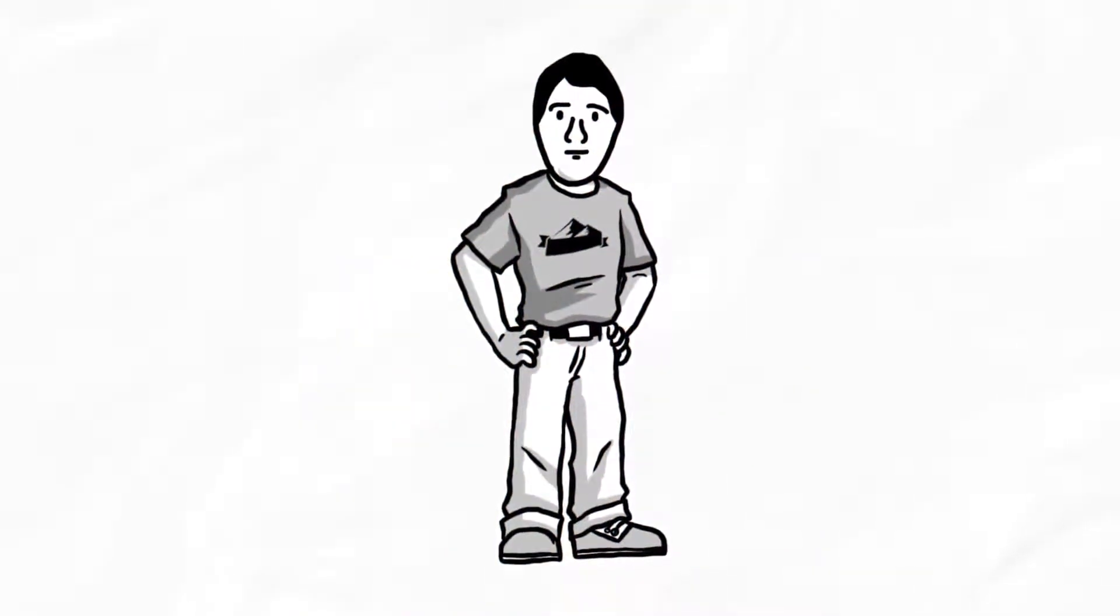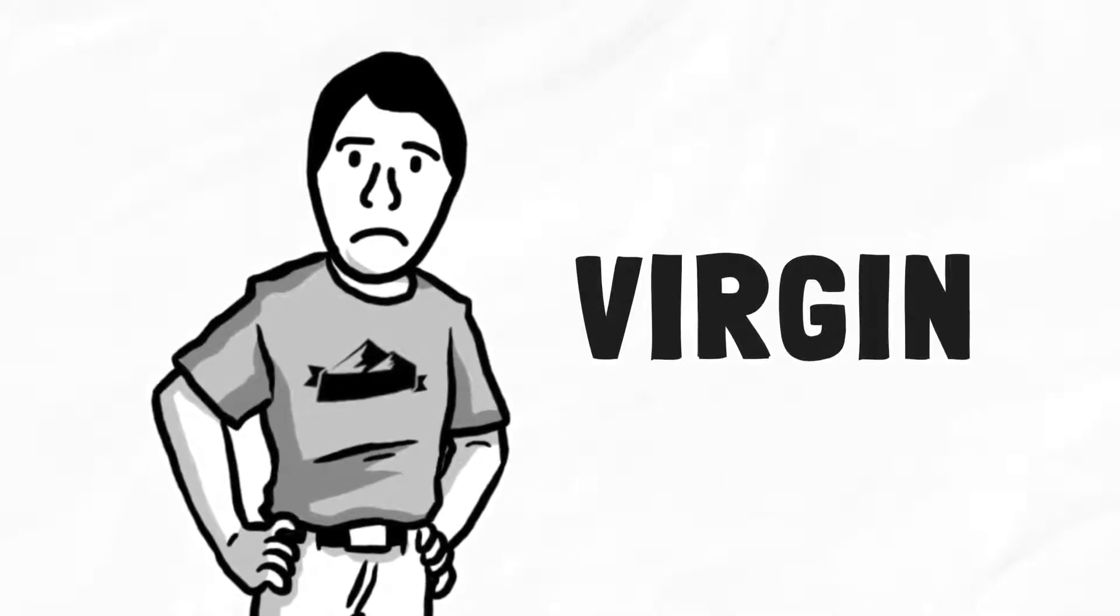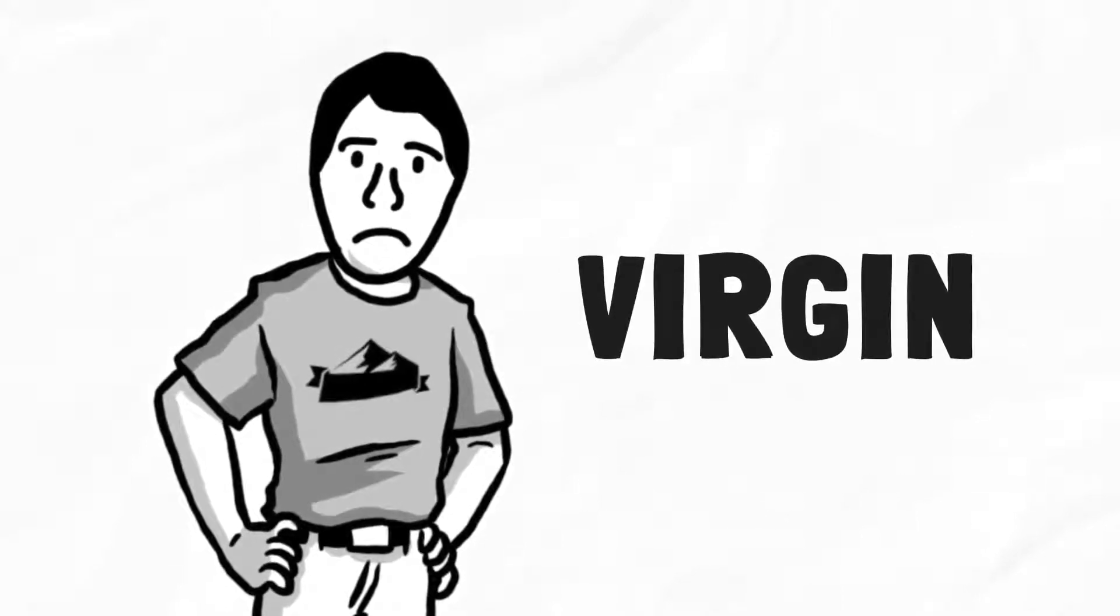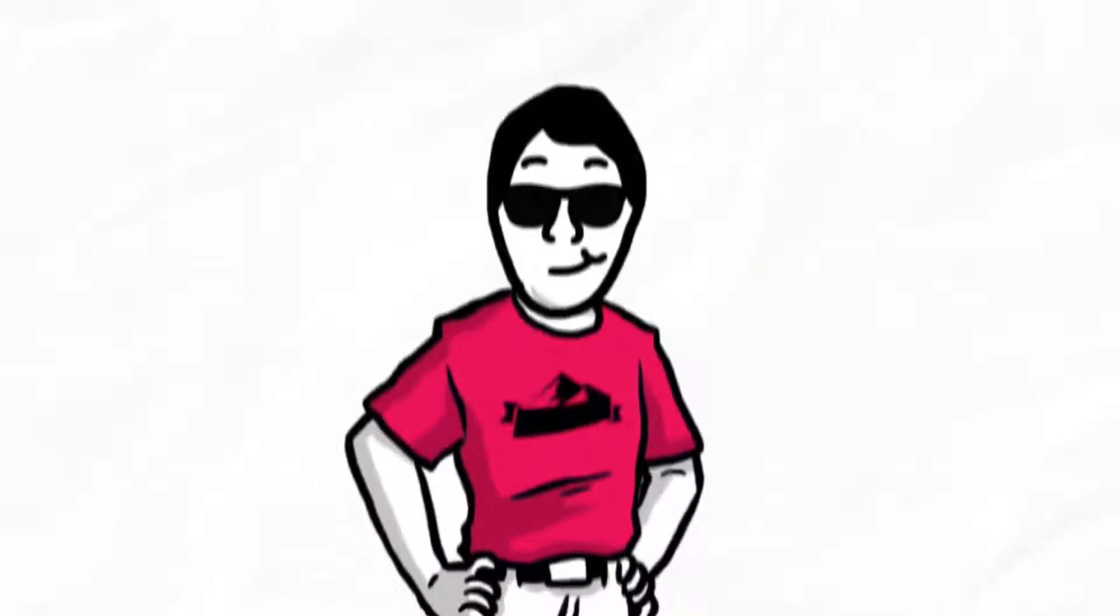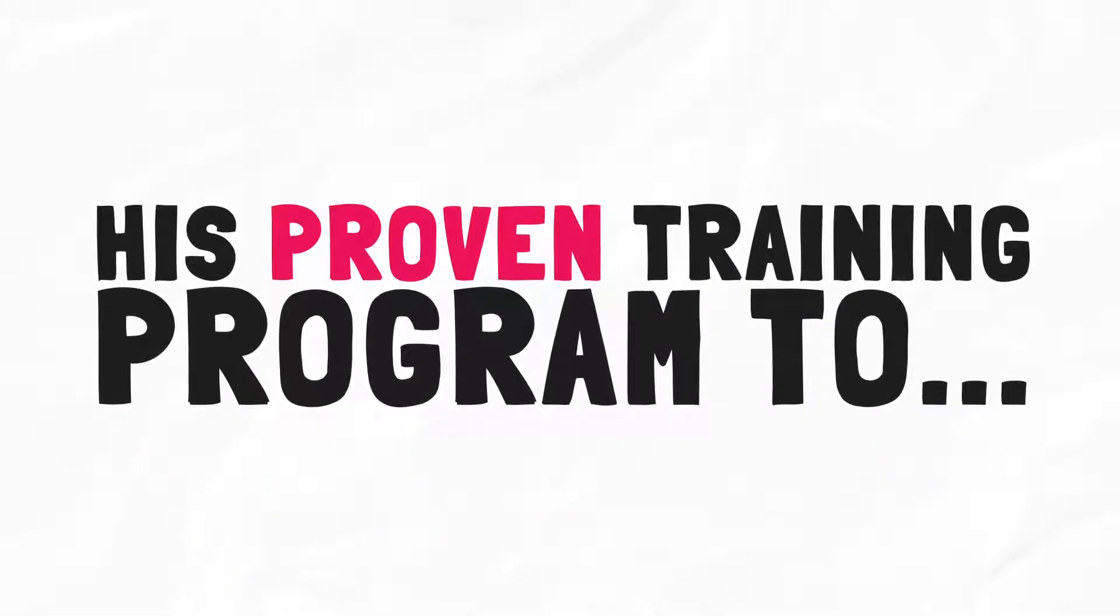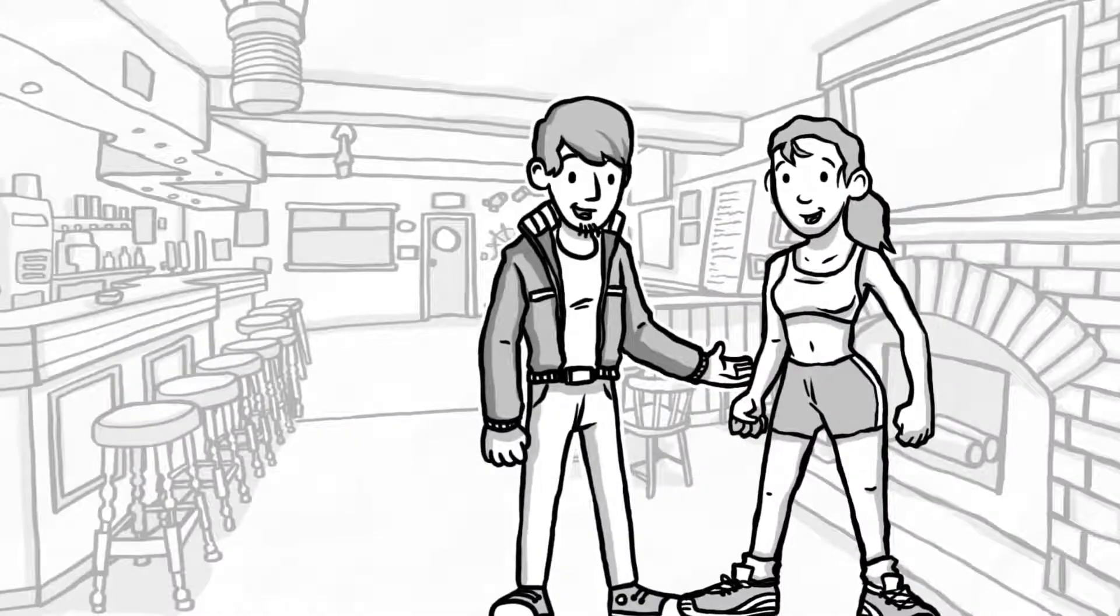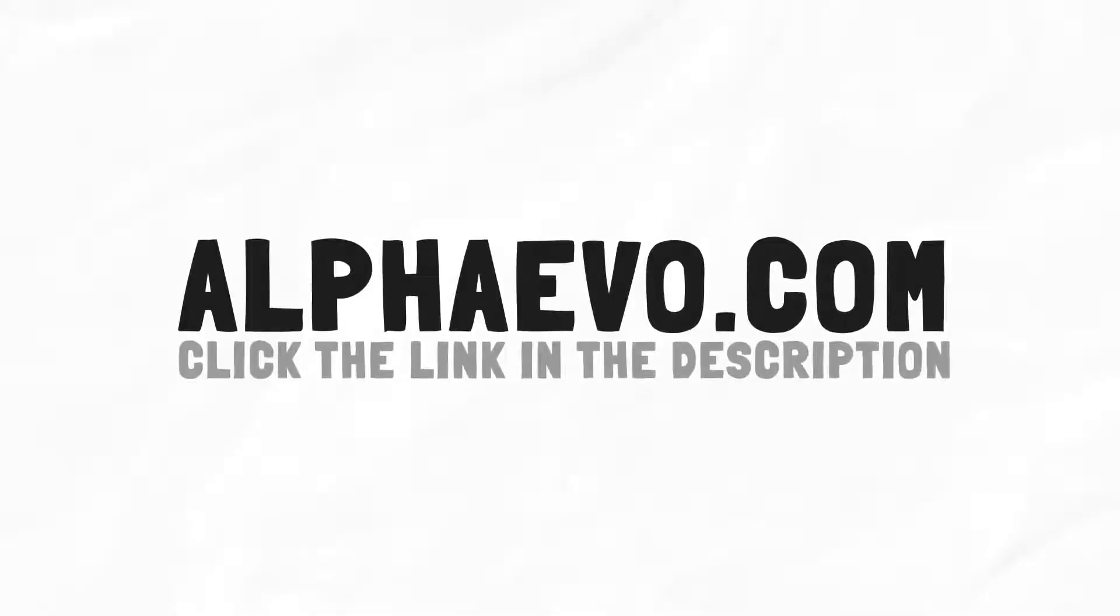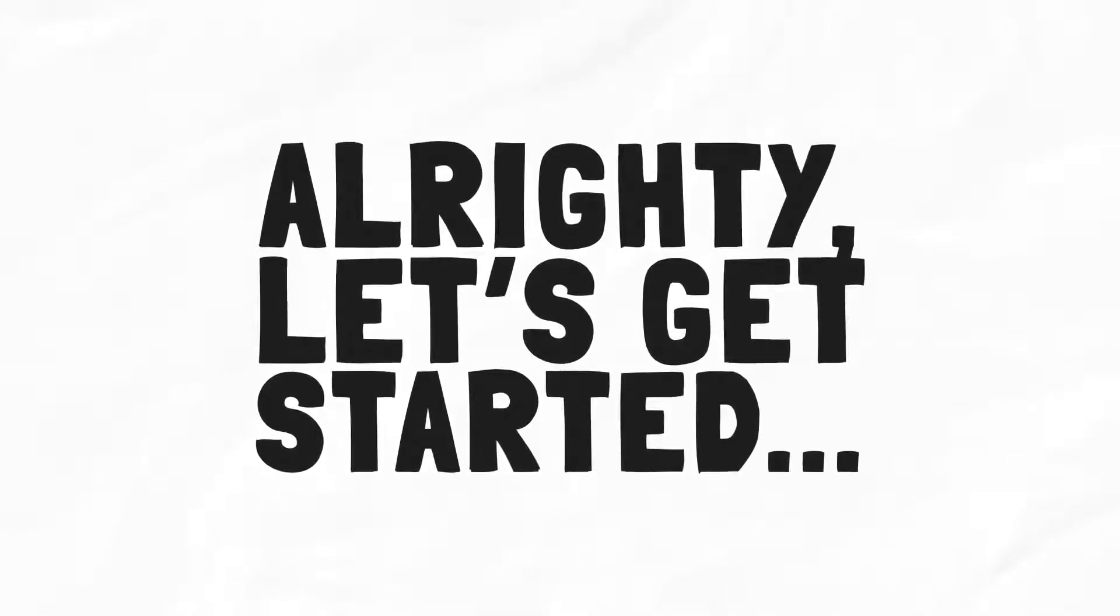Before we begin, I want to tell you about my buddy and dating expert John, who was once a virgin with low self-esteem and couldn't talk to girls to save his life. But thanks to discipline, will, and mentorship, he transformed his dating life. We have partnered to offer you 40% off his proven training program to get the girl of your dreams in 2019. It comes with two weeks of free mentorship. Go to alphaevo.com or click the link in the description. Alright, let's get started.